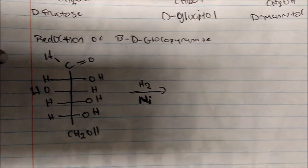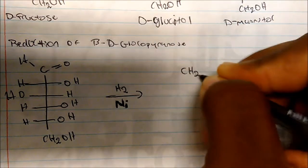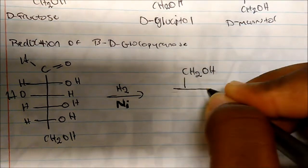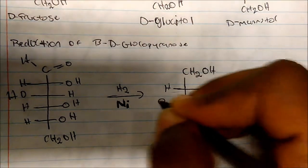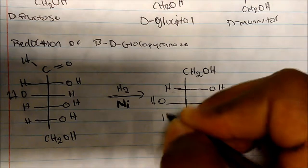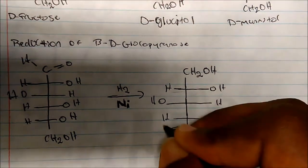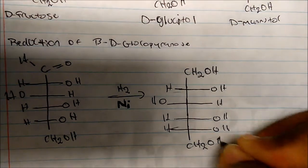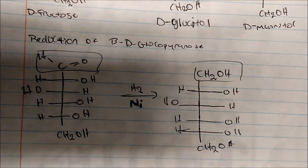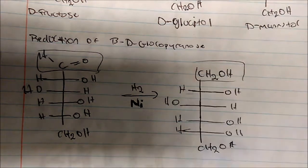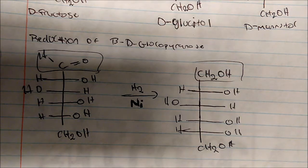That's the only change in the molecule — I reduce the carbonyl to an alcohol. So I'll get my CH2OH and set up the rest of the molecule. The difference that changed was the functional group: I get an alcohol. So when I take beta-D-Glucopyranose and add nickel, I get the alcohol. It doesn't have to be beta-D-Glucopyranose; it could be any anomer.